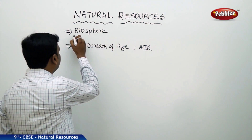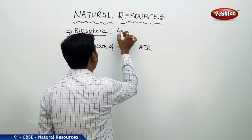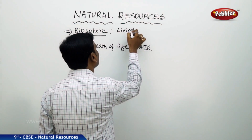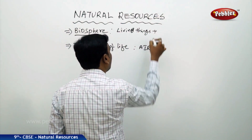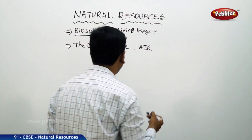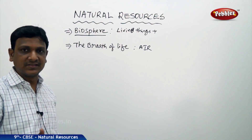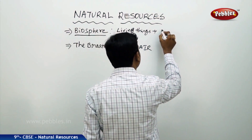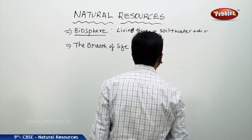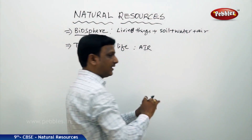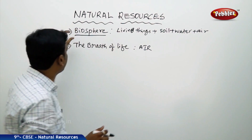The term biosphere includes the living things plus the things that are necessary for life. Living things cannot live in isolation — a living thing needs soil, water, and air. The layer in which all living things are able to live with the help of soil, water, and air is considered the biosphere.